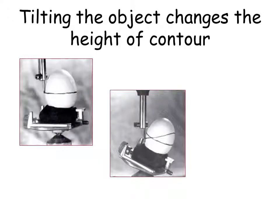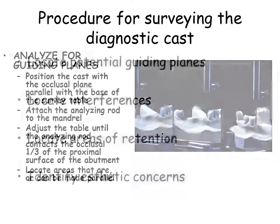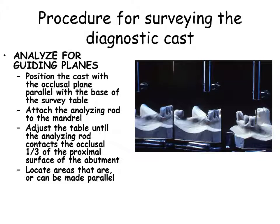The illustration demonstrates how tilting alters the position of the survey line. Alteration may facilitate a more conservative design. In the following slides we will discuss the basic surveying procedure. The cast is secured at zero tilt. Interproximal and lingual surfaces are examined for areas that are, or can be, made parallel. The cast may be tipped anteriorly and posteriorly. Options for parallelism range from minor enameloplasty to restoration with fixed crowns.